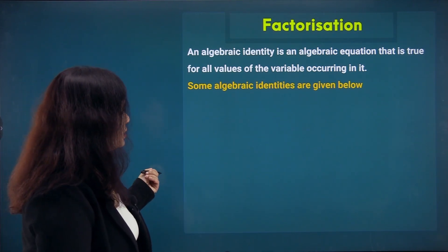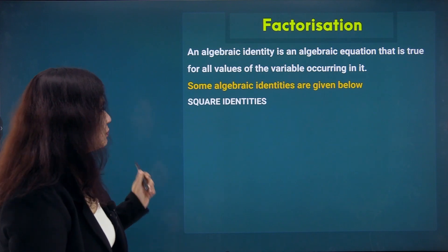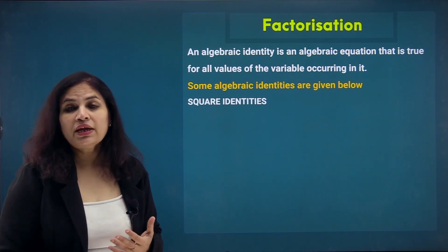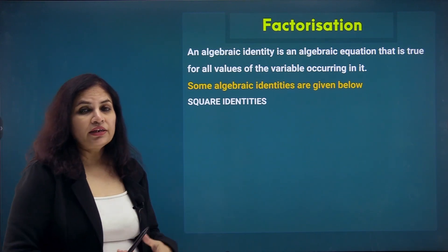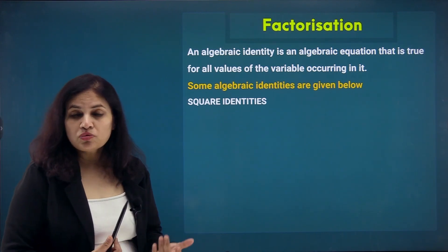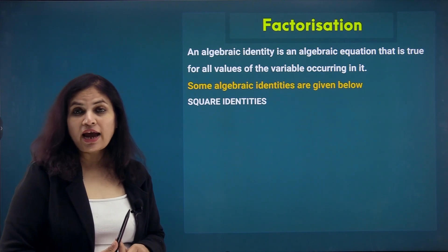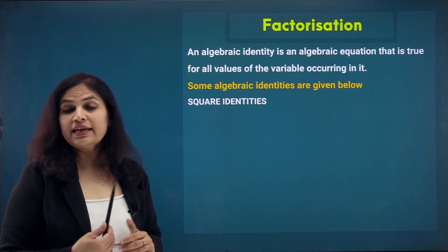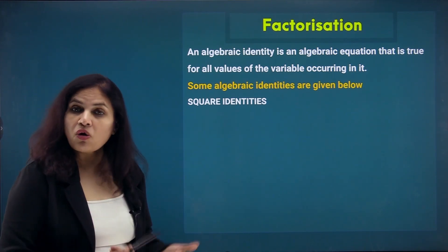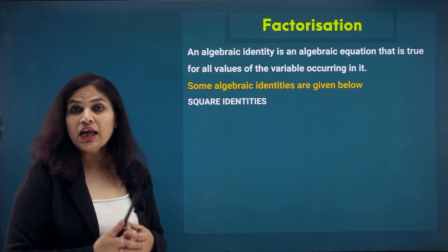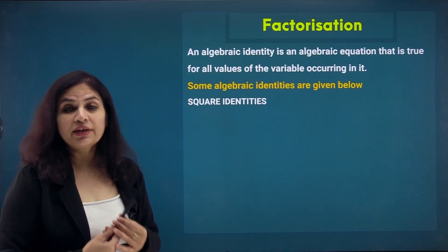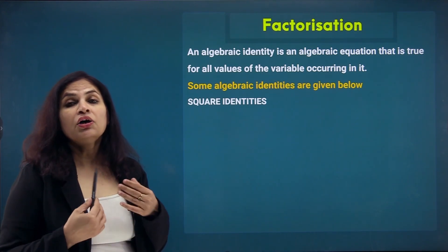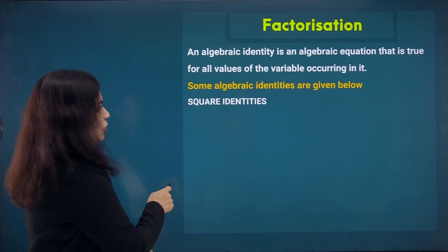Some algebraic identities are given below. We divide the identities into two parts: square identities and cubic identities. Accordingly, they will help us to factorize a quadratic polynomial and a cubic polynomial.